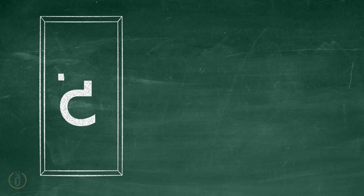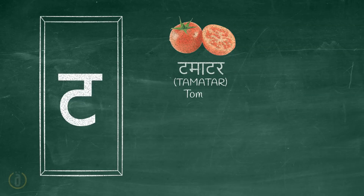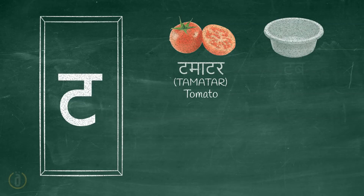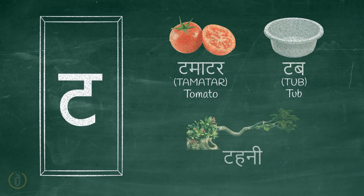Now let us learn some words starting with the letter Ta. Tomato. Tub. Tahni — branch.